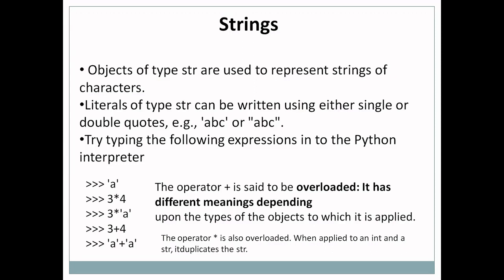Objects of type str are used to represent strings of characters in Python. Strings in Python are represented by the str object, and literals of type str can be written by using either single quotes or double quotes.